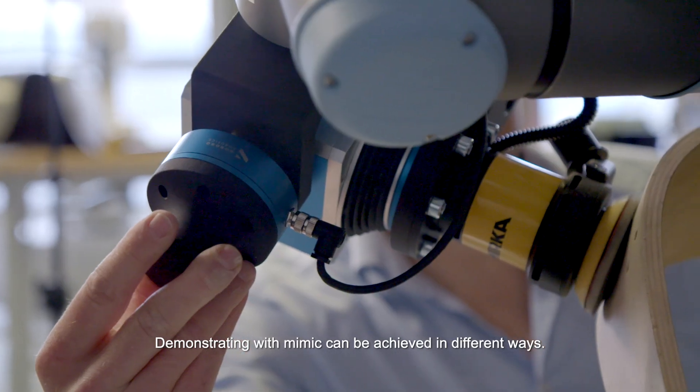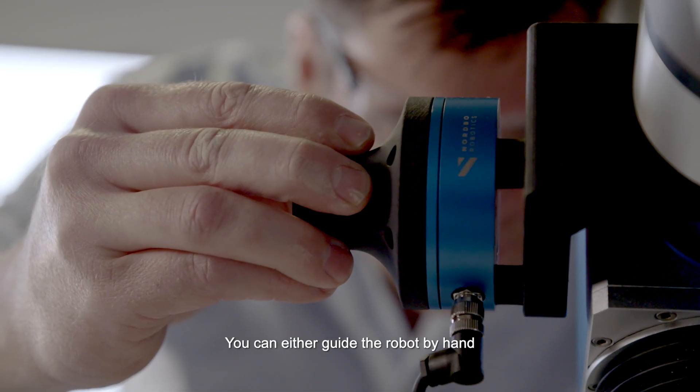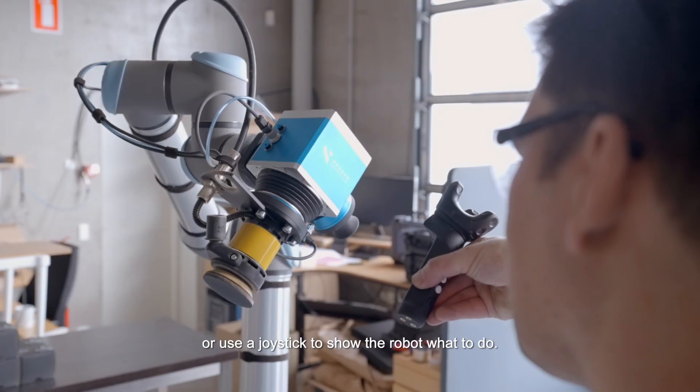Demonstrating with Mimic can be achieved in different ways. You can either guide the robot by hand or use a joystick to show the robot what to do.